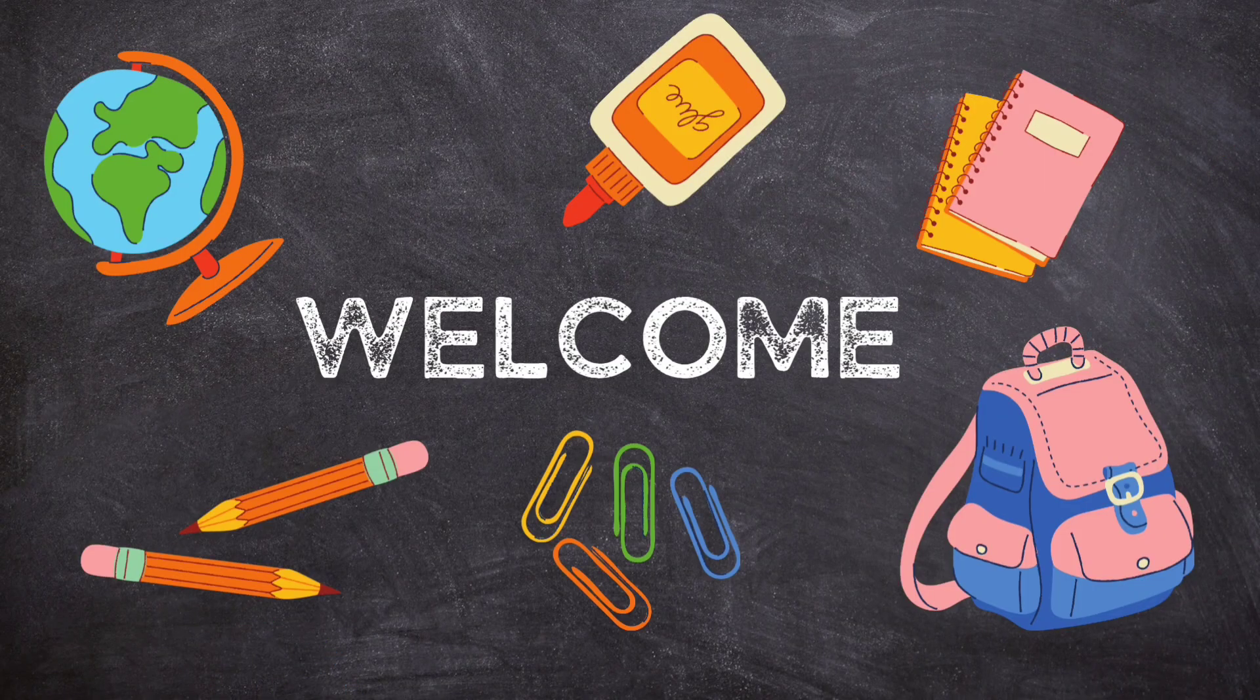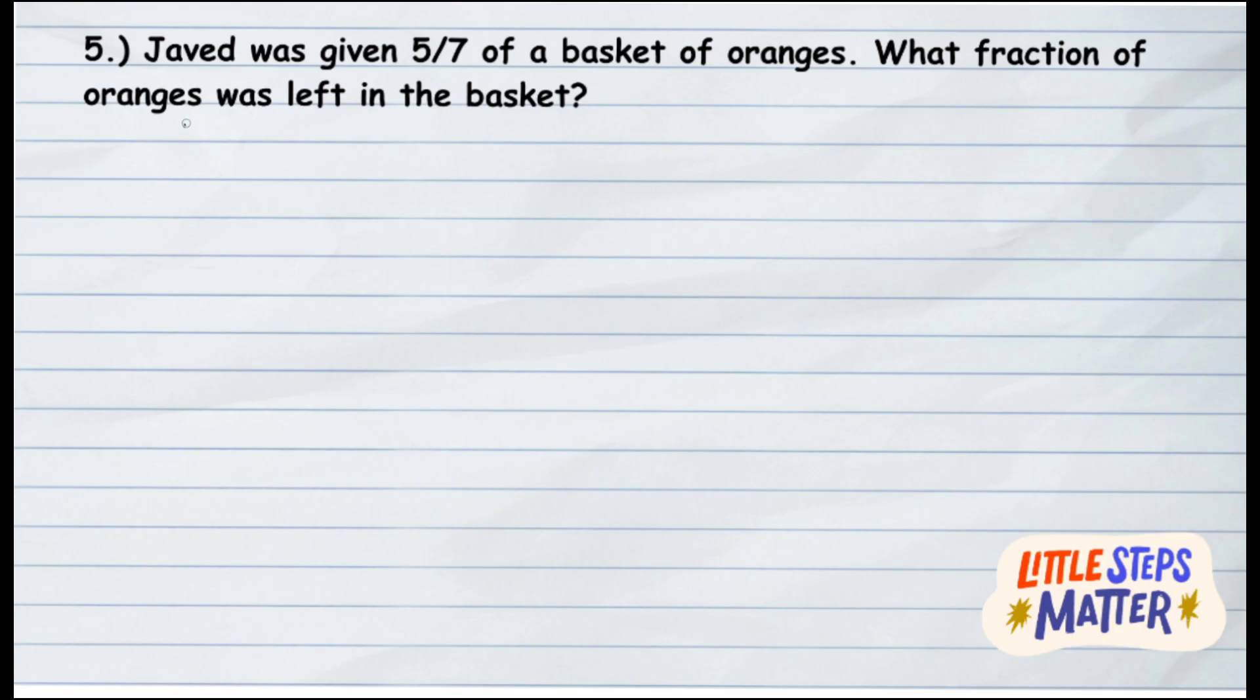Hello kids, welcome to the class. Today we are going to solve Exercise 7.5, question number 5, which is a word problem. The question says Javid was given 5 upon 7 of a basket of oranges. What fraction of oranges was left in the basket?